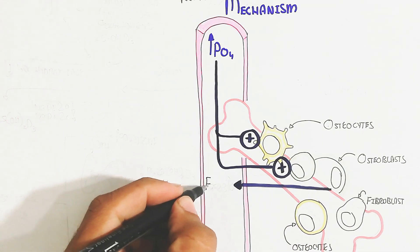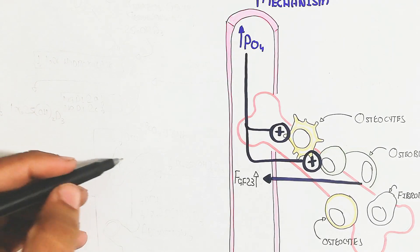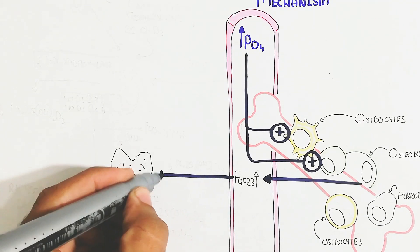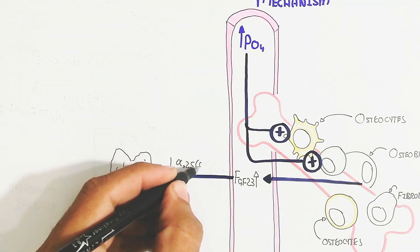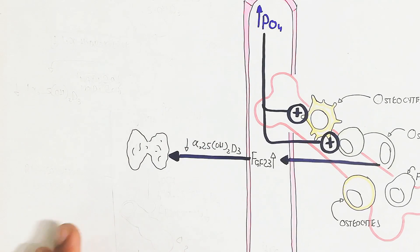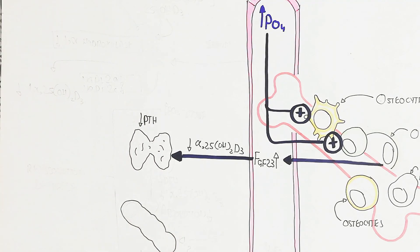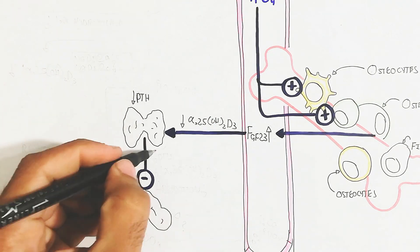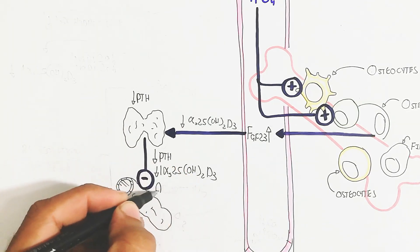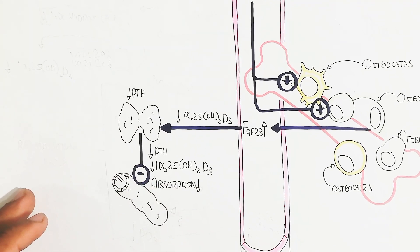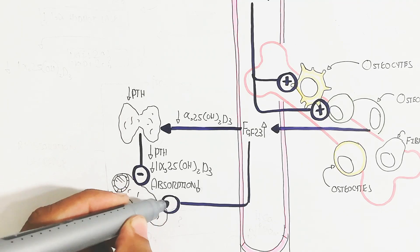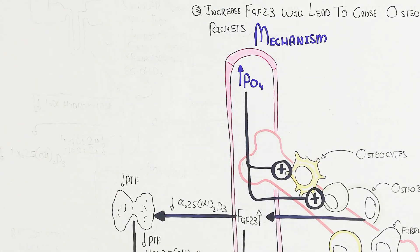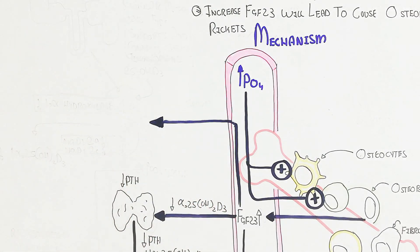When FGF23 rises in the blood circulatory system, it will target the parathyroid gland in the presence of deficiency or decrease of the 1-alpha-25-dihydroxy vitamin D3. When vitamin D3 decreases, parathyroid hormone will decrease. And when parathyroid hormone decreases and the 1-alpha-25-dihydroxy vitamin D3 decreases, this will lead to decreased absorption in the intestine. So the phosphate will not be absorbed into the blood circulatory system from the digestive system but will be excreted in defecation. FGF23 also targets the digestive system directly, but it is indirect, remember.